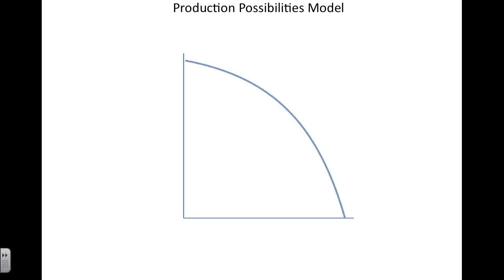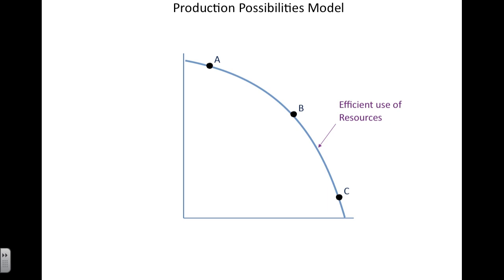On this graph there are essentially three points. Points along the curve represent an efficient use of resources. When all of our resources are being used as they should, whether we are at point A, B, or C, this is an efficient use of resources.